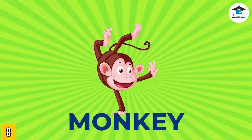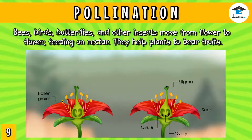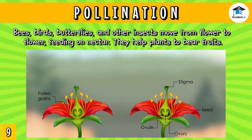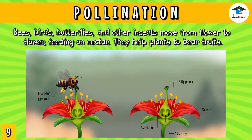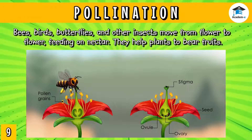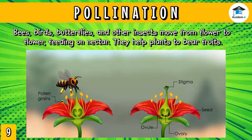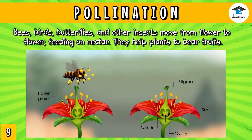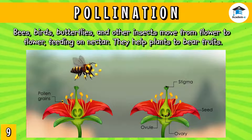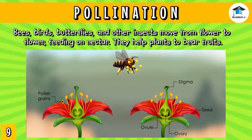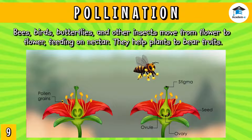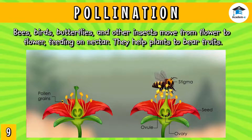Animals are not only important to people but also to plants. Pollination is necessary for plants to create new seeds. Bees, birds, butterflies, and other insects move from flower to flower feeding on nectar. As they feed, pollen from the flower's stamen attaches to them and is transferred to another plant's stigma, helping plants to bear fruits.